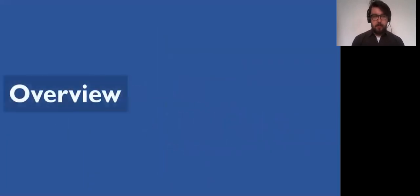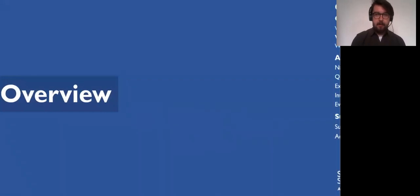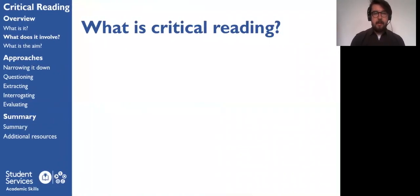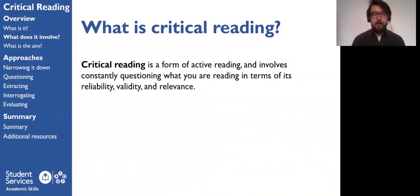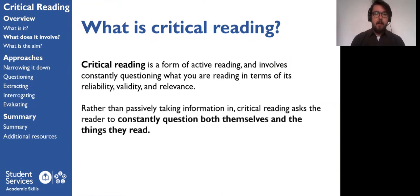So let's start with an overview. What is critical reading and how does it differ from other kinds of reading? Well, critical reading is a kind of active reading and it involves constantly questioning what you're reading in terms of its reliability, its validity, and its relevance to what you're writing. You're going to be reading for some kind of purpose, be it for a presentation or an assignment, so you want to be thinking about how you're reading and how it links back to what you're eventually going to be writing. So rather than passively taking information in, critical reading asks the reader to constantly question both themselves and the things they read in terms of what's being said and how it all links together.